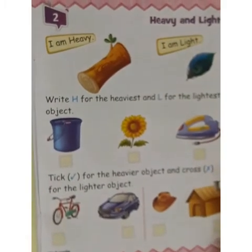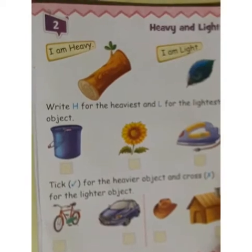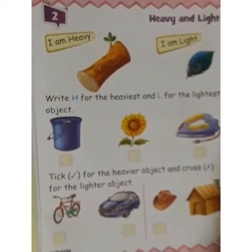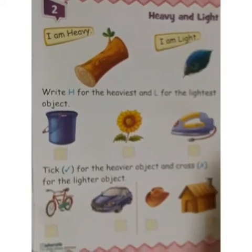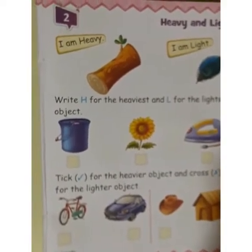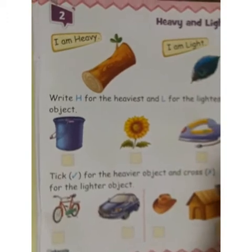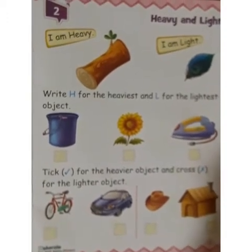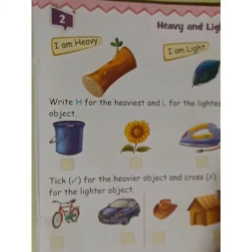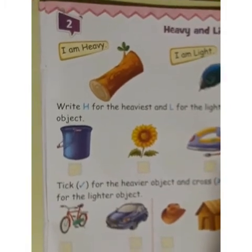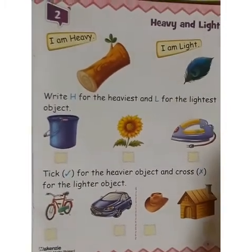A flower will be light. How about an iron? It will be heavy. For the heavy and light exercise, you have to write H for the heaviest and L for the lightest. The next question is to circle the heaviest objects and cross the lightest objects.